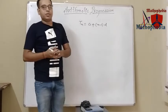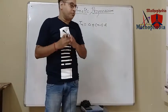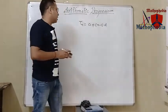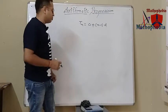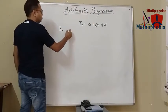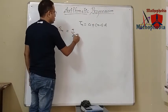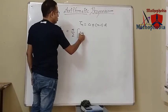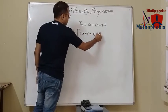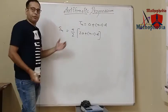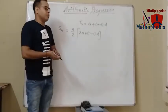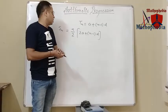Today we are going to study how to find out the sum of n terms of a given arithmetic progression. The formula for that is: Sn equals n upon 2 times 2a plus n minus 1 into d. This is the formula to find out the sum of n terms of a given arithmetic progression.